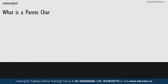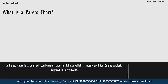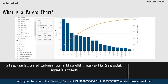A Pareto chart is basically a dual-axis combination chart in Tableau. On its primary axis, bars are used to show basic raw quantities for each dimension, usually sorted in descending order. On a secondary axis, a line graph is used to show the cumulative total in a running percentage format. This chart type is most known for being part of the seven basic tools of quality control, and is traditionally used to identify the biggest opportunities for improvement.